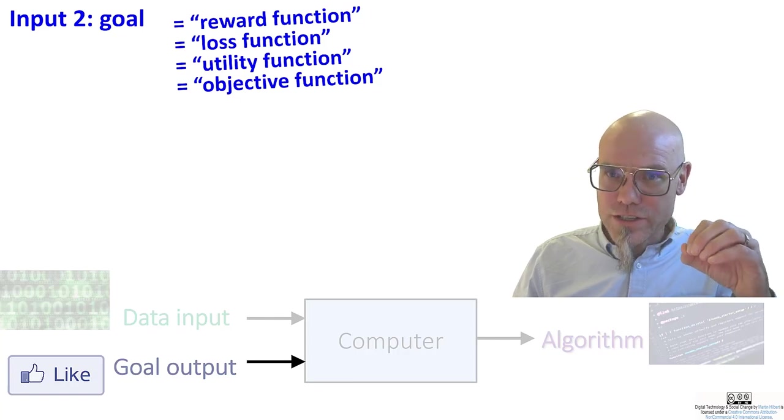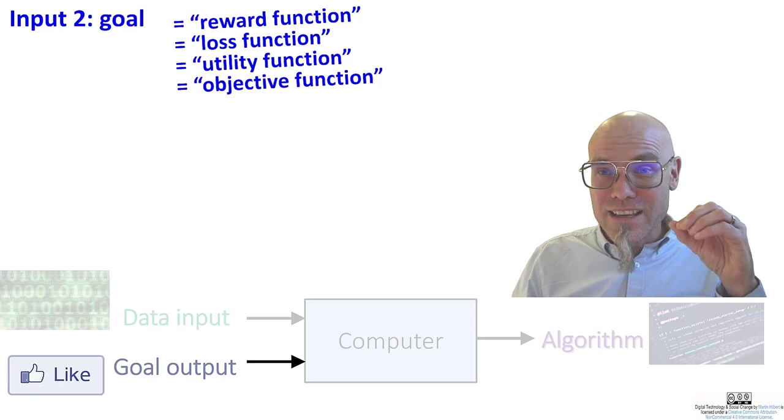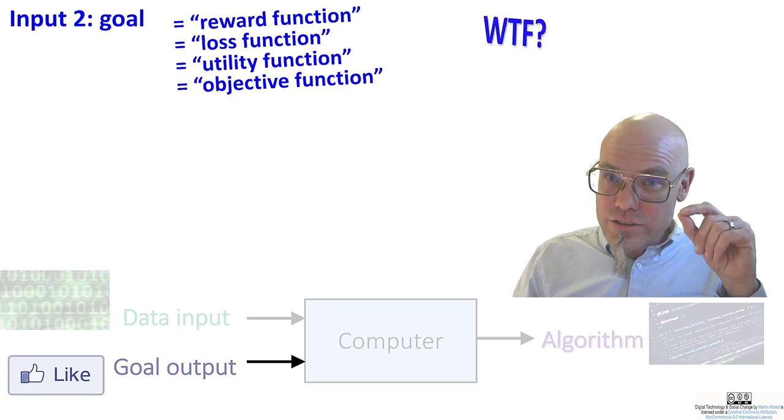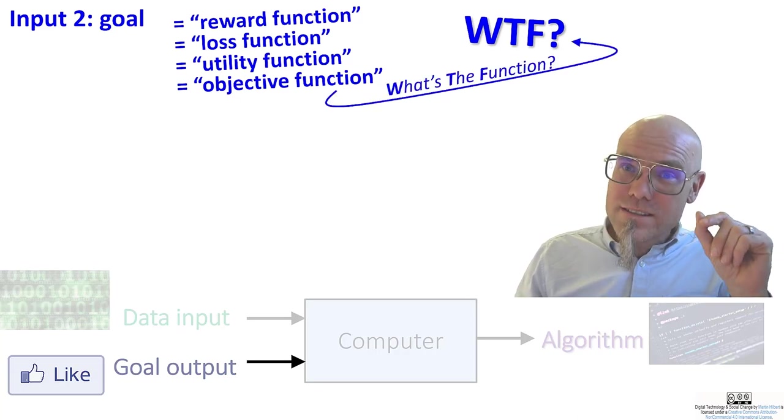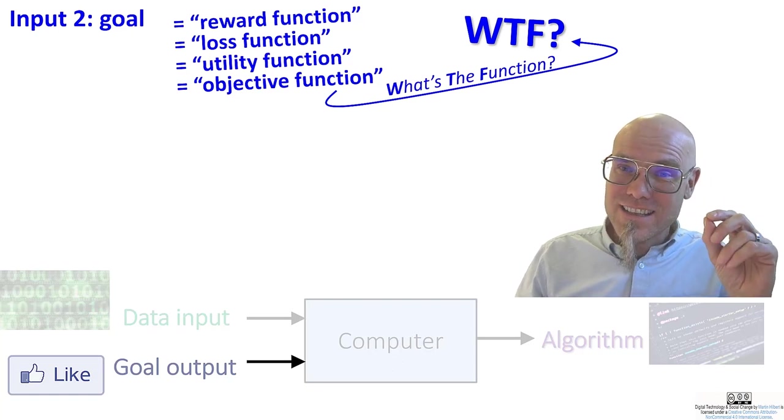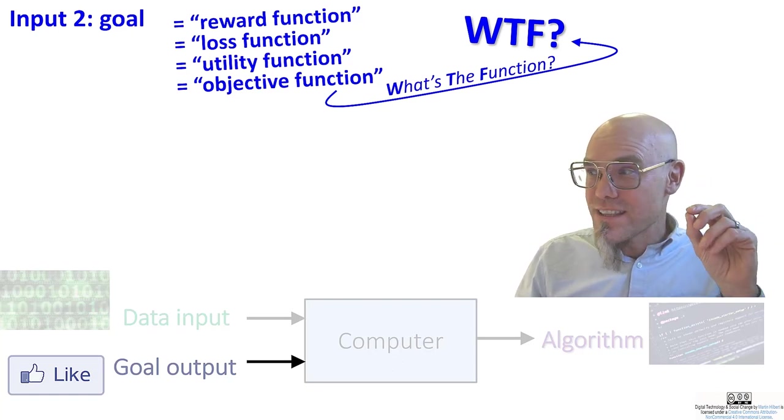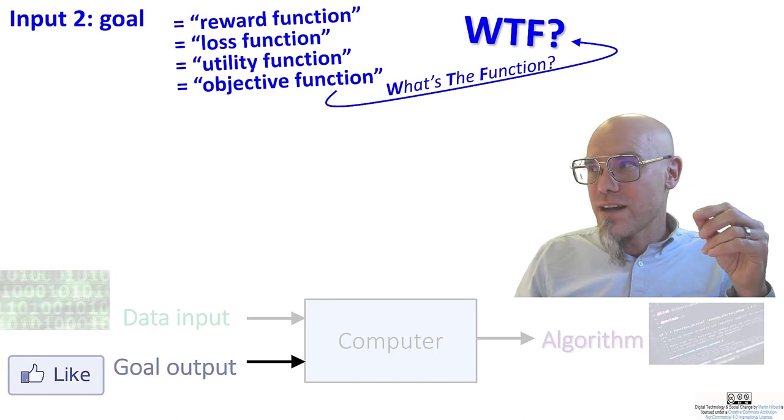And the most important question in all of that, and maybe the most important question in machine learning, therefore is WTF. Always ask yourself, WTF. What's the function? Right? So what is the reward function that we give the machine that will tell you then what the machine is optimizing for?